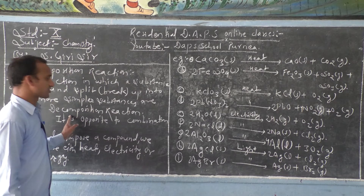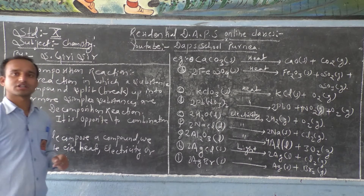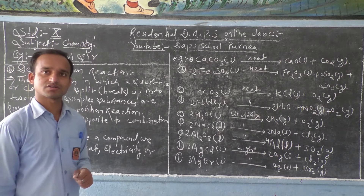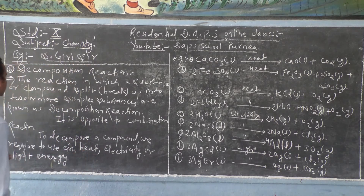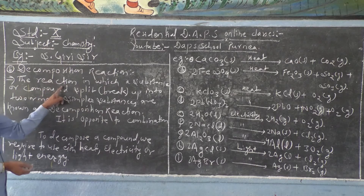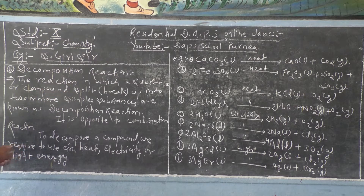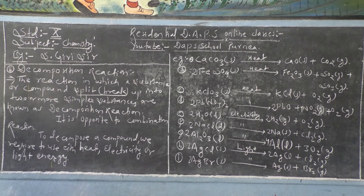Now, dearest friend, the next topic is about decomposition reactions. After the discussion of combination reactions, let us discuss what decomposition reactions are. The reaction — the definition can be written as: the reaction in which a substance or compound splits, meaning breaks up, into two or more simpler substances is known as a decomposition reaction.